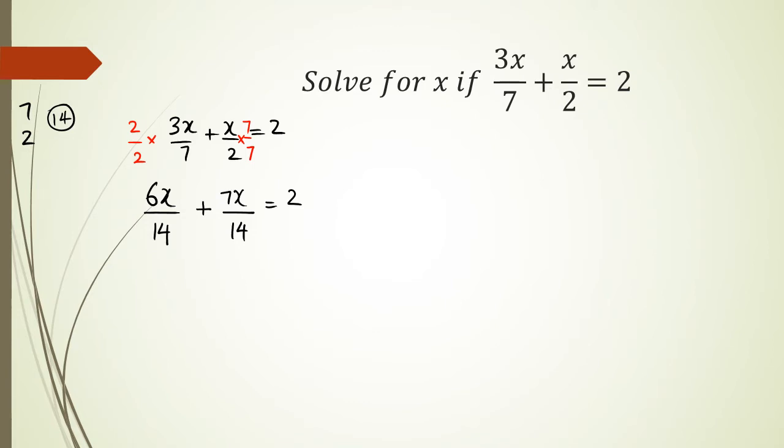From here, because they have the common denominators, I could combine these two terms as 6x plus 7x over 14 equals 2. So simplifying this, I'm going to get 13x over 14 equals 2, and 13x equals 14 times 2, which means 13x is 28, and x is equal to 28 over 13.